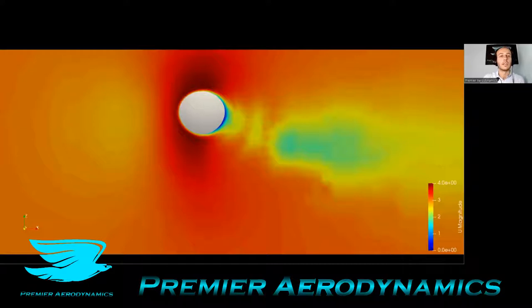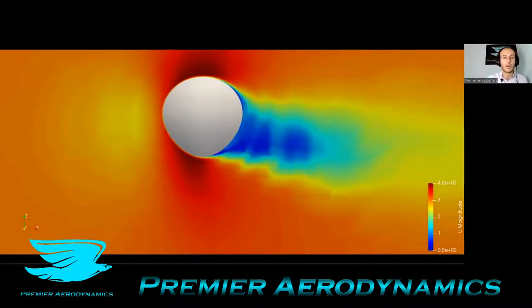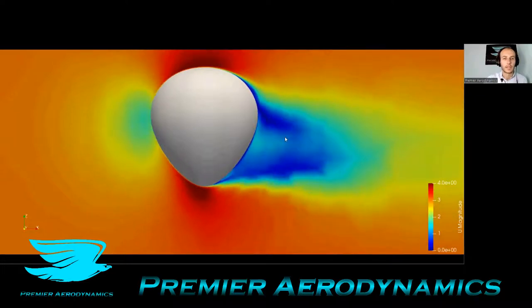And this is the Y plane again, but with the u_mag, so the x velocity—oh sorry, the overall velocity. And this gives you a good idea of the wake. So it is pretty wakey and there are these two regions where the flow is significantly smaller than everywhere else. That's quite interesting.